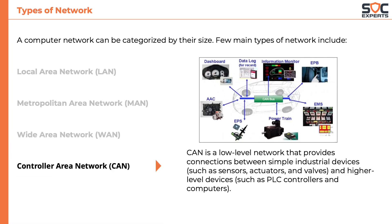Next, we have Controller Area Network, or CAN, which is a low-level network that provides connection between simple industrial devices like sensors, motors, and valves, and higher-level devices like PLC controllers and computers. The network that connects a car dashboard and various sensors like fuel capacity, tire pressure, engine temperature, etc. can be considered a Controller Area Network.